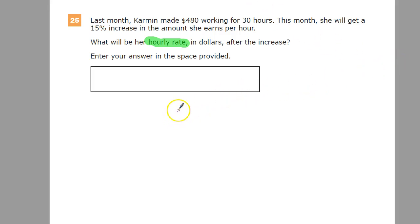In order to do that, I'm going to divide. How else would you break $480 into 30 parts to find the hourly rate? Because I want to know one hour.